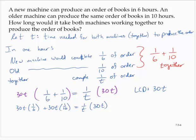Reducing some things out here. Between the 30 and the 6, that reduces to a 5, so I've got 5T. Between the 30 and the 10, that reduces to a 3, so I've got plus 3T. And on the right-hand side, the T's reduce out, leaving a 30.